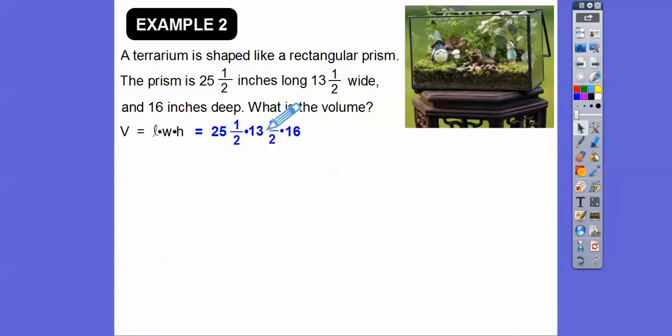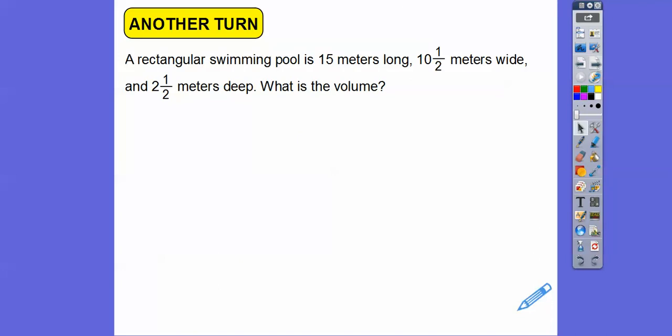So volume is length times width times height. So we're going to multiply all those numbers, change them to improper fractions. So 2 times 25 is 50. 50 plus 1 is 51, 51/2. 2 times 13 is 26, plus 1 is 27, 27/2, and then 16 over 1. And then cross cancel. 2 and 2 equals 4. 4 goes into 16 four times. So we're left with 15 times 27 times 4. And so we get 5,508 cubic inches. Isn't that fascinating, guys?